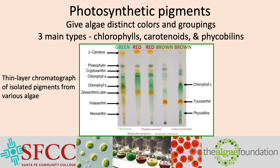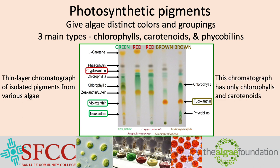In a later lab, you will separate pigments by TLC. The green algae are the only group with the carotenoids violaxanthin and neoxanthin. The red algae have high amounts of cryptoxanthin, and the brown algae have fucoxanthin. Generally, each of the algal types consistently shows similar pigment profiles.